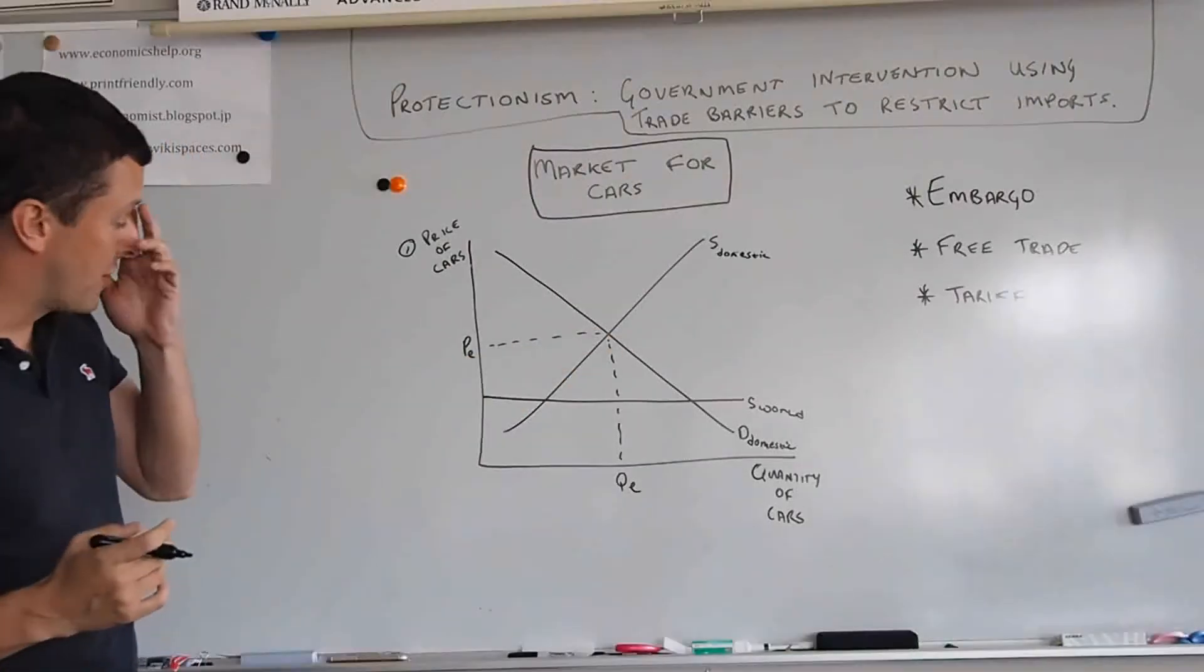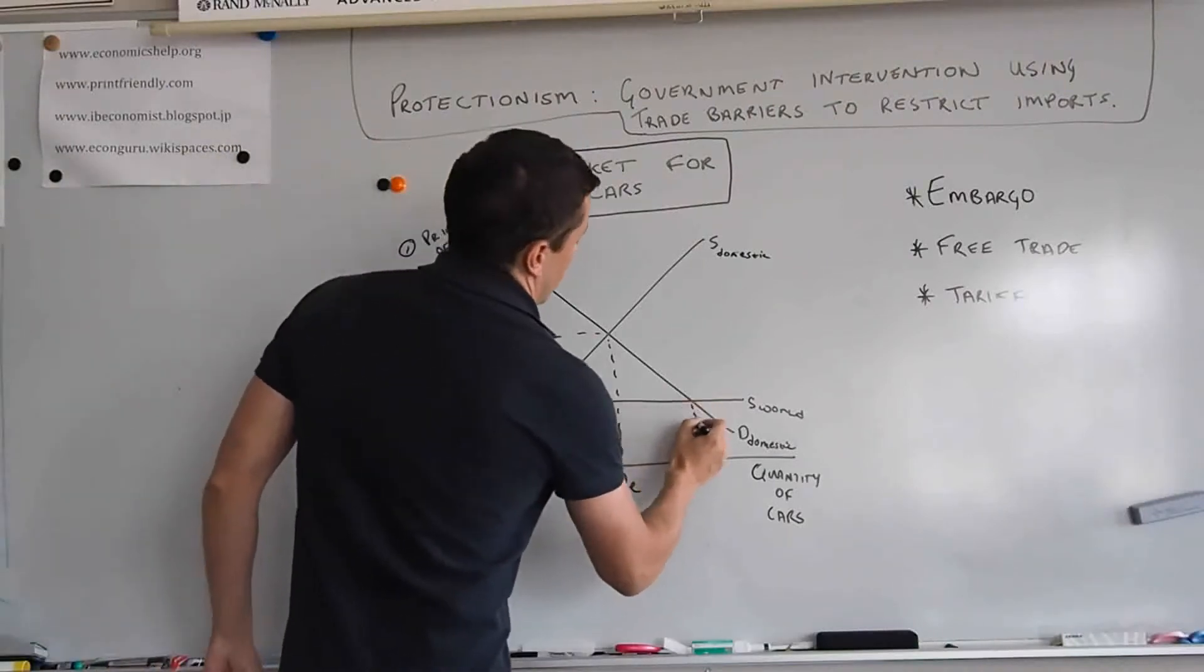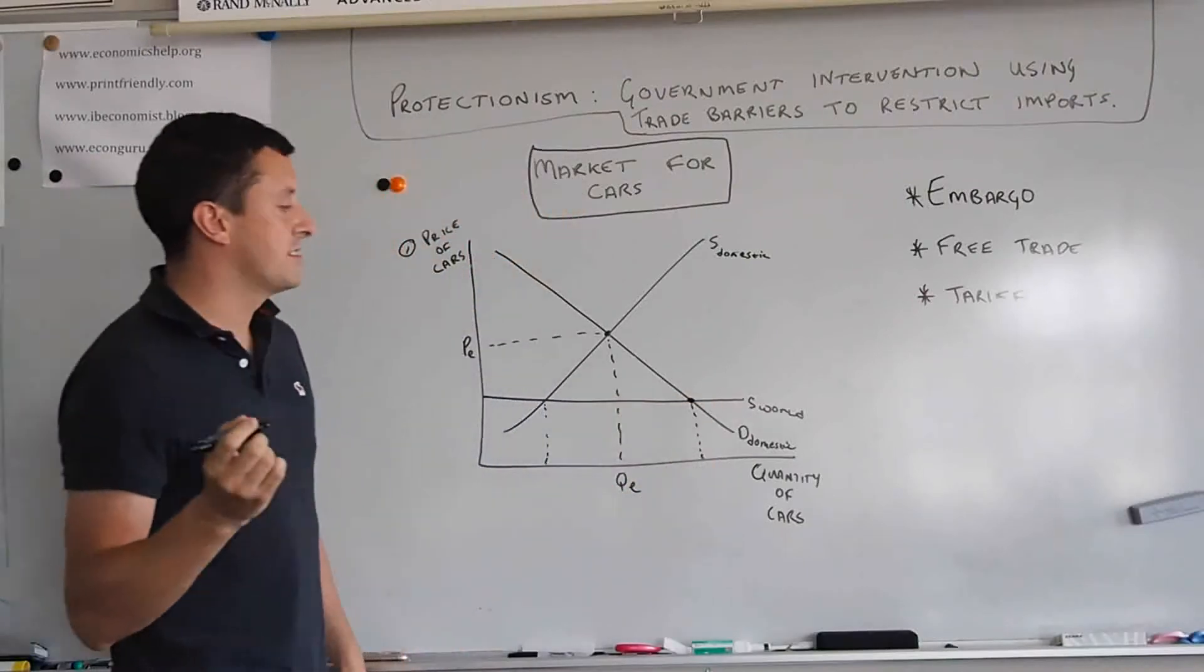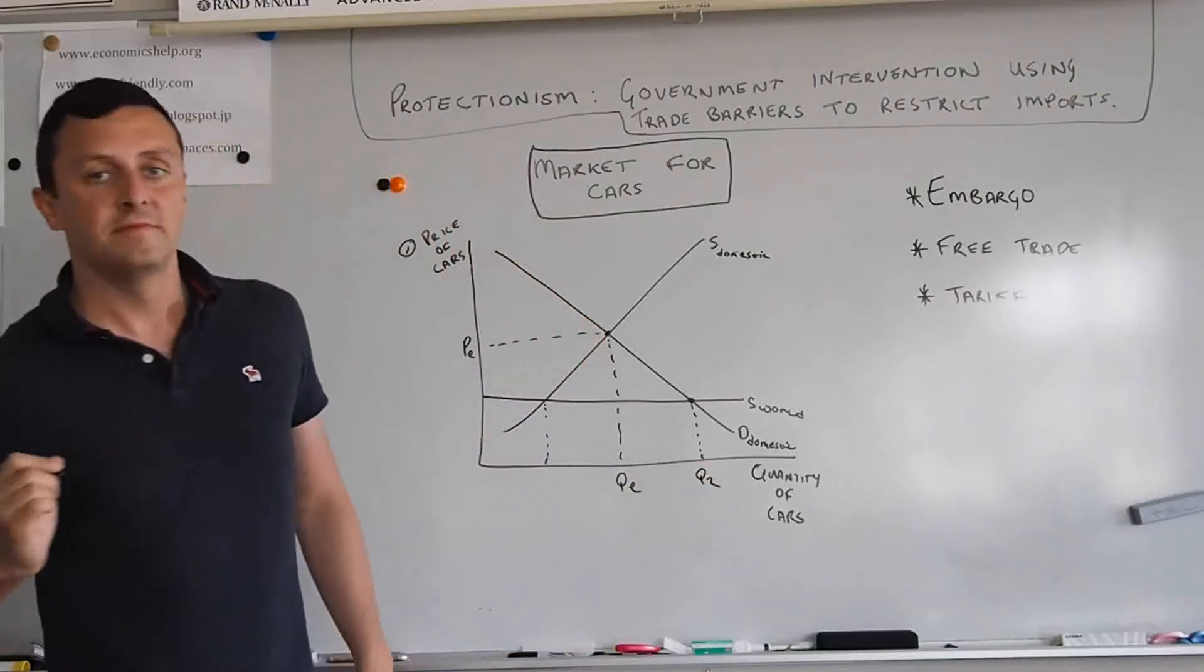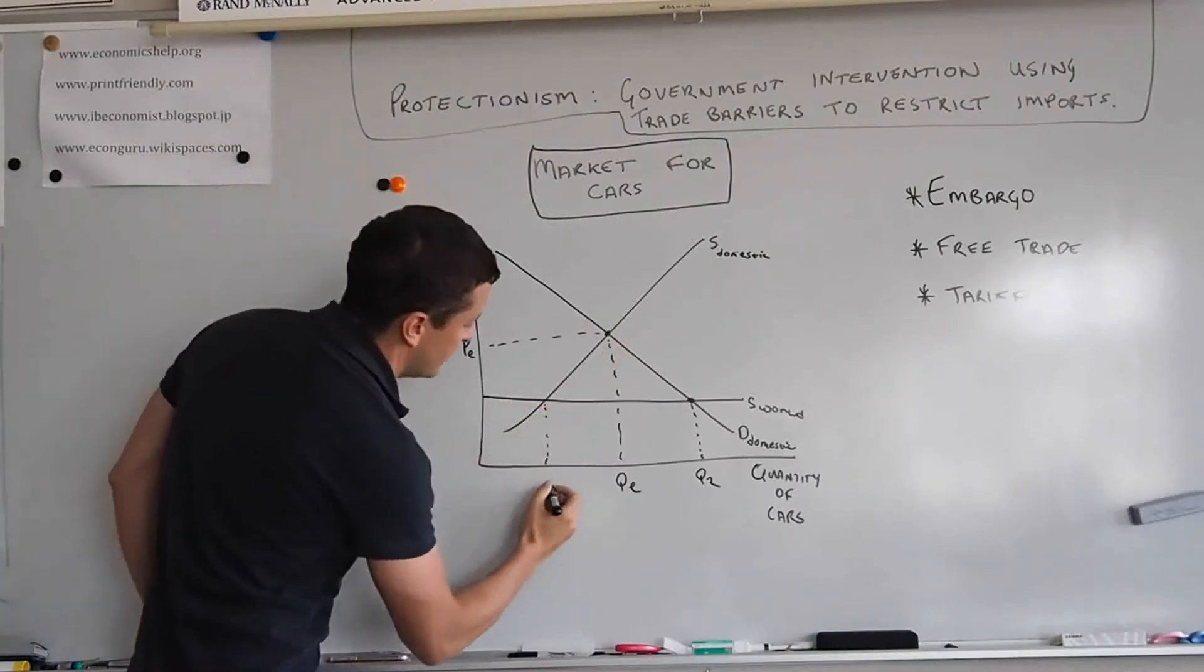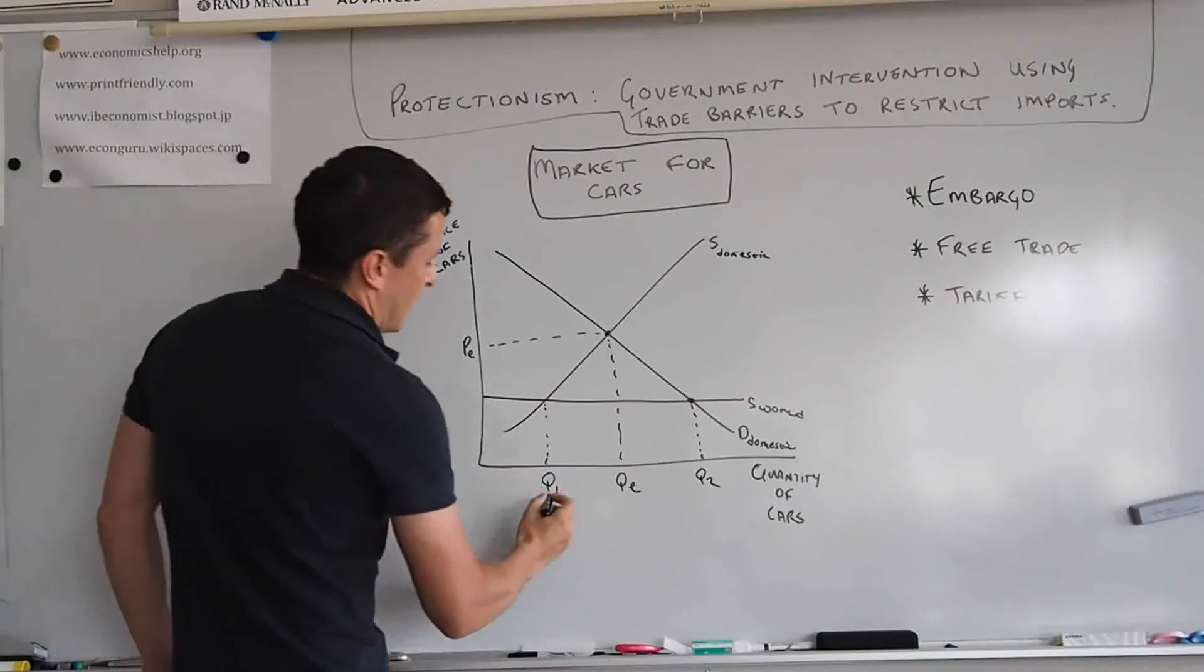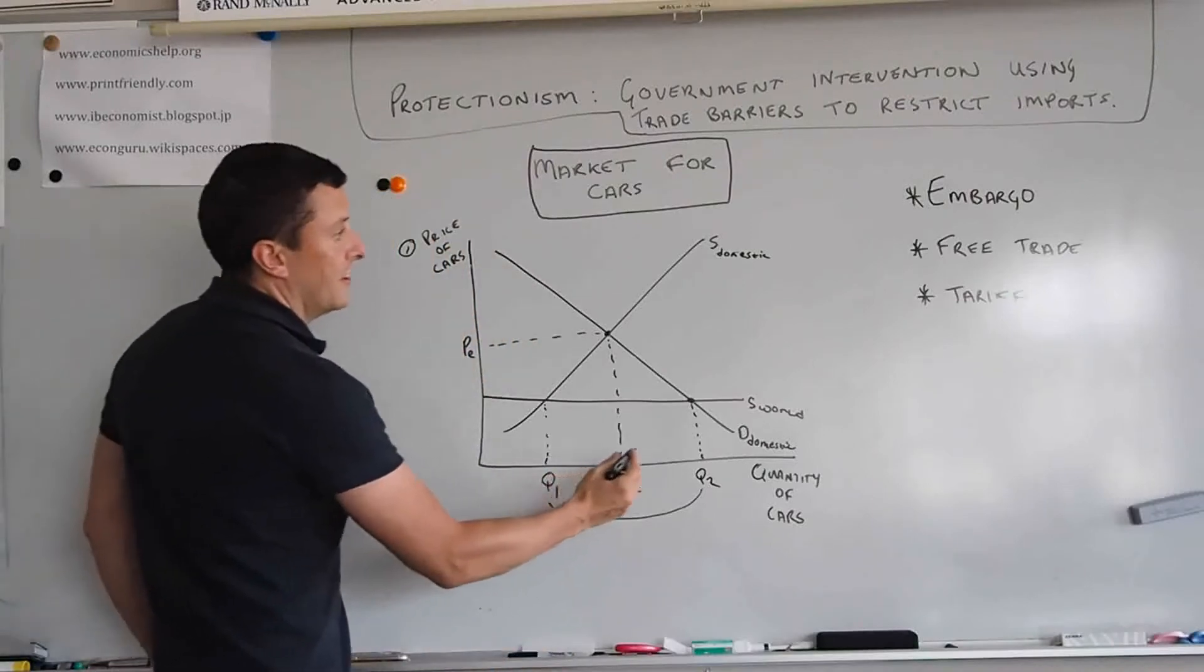Now how does that affect the graph? So you can see here, the quantity demanded of cars will increase to Q2, we'll call it. But at the same time, the quantity supplied will decrease from QE to Q1. This means that you have a total number of cars imported into the country from Q1 to Q2.